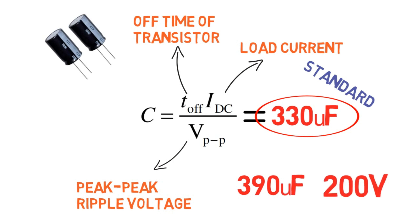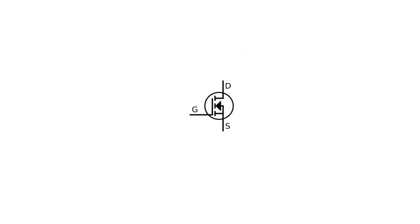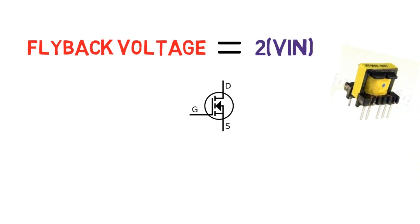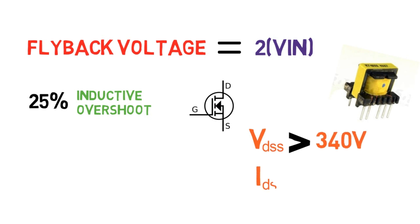Operating voltage should be greater than maximum voltage present in the circuit. Here it is 150 volt. Now we will select the MOSFET suitable for our design. Typically the flyback voltage arising at the transistor is twice of the input voltage. Due to inductors we will also consider 25 percent margin for inductive overshoot. Hence we will select MOSFET with VDS greater than 340 volts and IDS should be also greater than twice of load current.